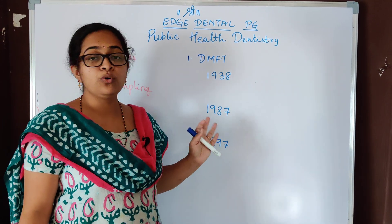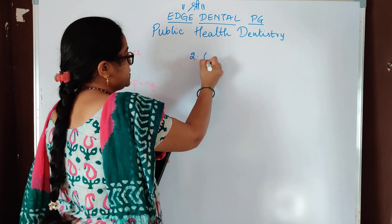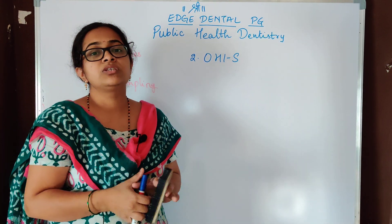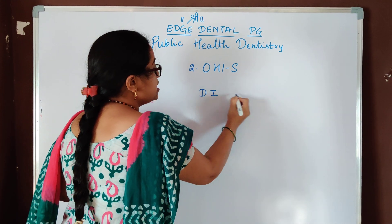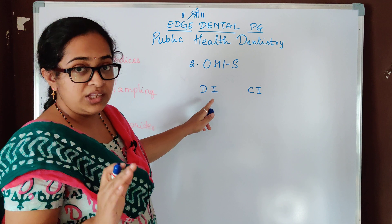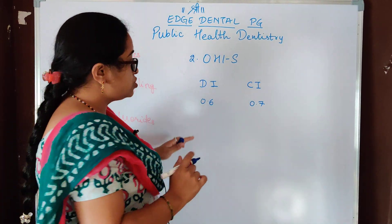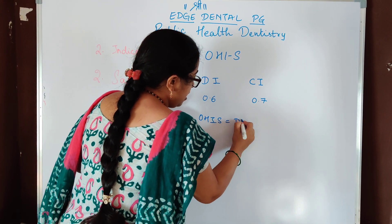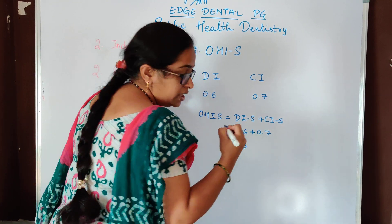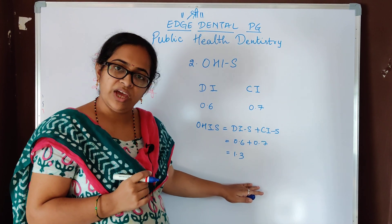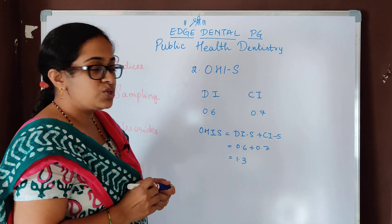Those were the important points related to DMFT. Another important index asked was the OHI-S. The OHI-S index has two components: the Debris Index (DI) and the Calculus Index (CI). In the exam question, a Debris Index score of 0.6 and Calculus Index score of 0.7 were given, and the prognosis was asked. OHI-S equals DI plus CI, that is 0.6 plus 0.7, giving 1.3. A score of 1.3 comes under 'fair' prognosis. The scale is: 0 to 1.2 is good, 1.3 to 1.7 is fair, and more than 1.7 is poor.